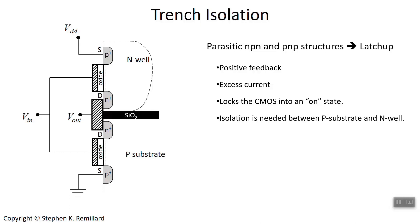Next we need to talk about switching speed. A fast microprocessor means fast CMOS, so increasing switching speed is really important. Parasitic capacitance and resistance work against switching speed, and we'll look into this in the next lecture. In a later chapter we'll examine how to minimize off-state leakage current, which is a big deal in chapter seven.